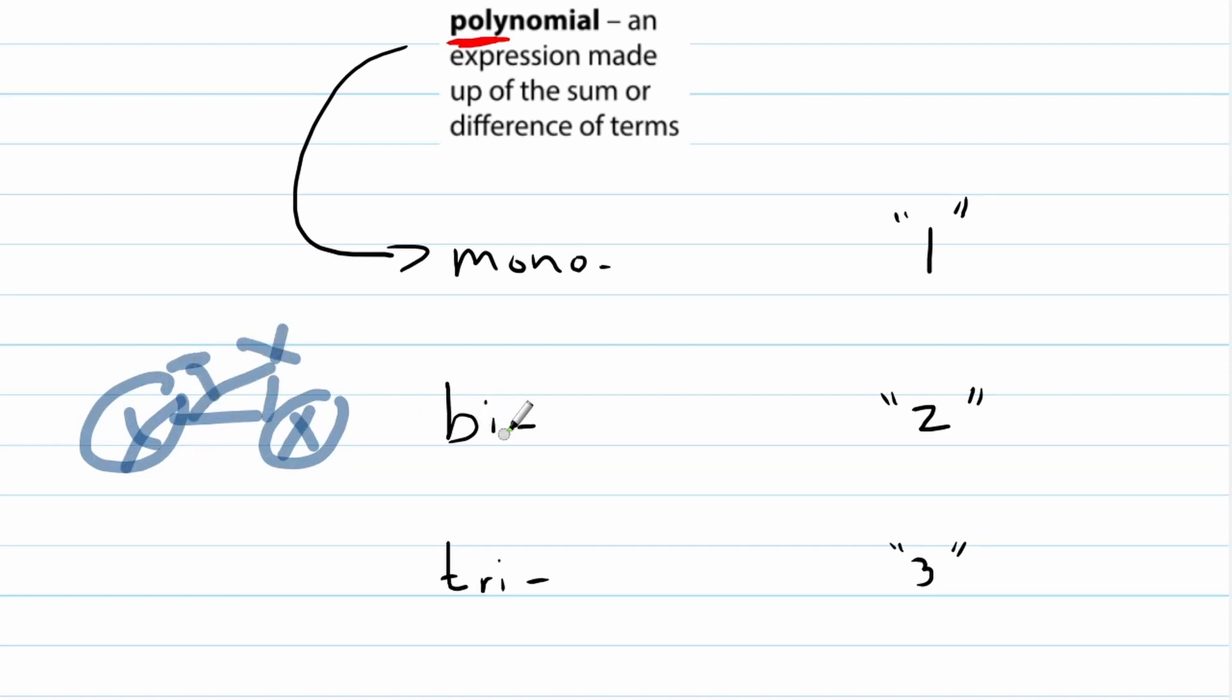Okay, so bicycle have two wheels. Therefore a binomial has two terms. A trinomial, three terms. So this is how we talk about it. Remember we're talking about terminology and definitions first.